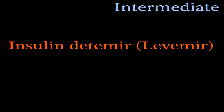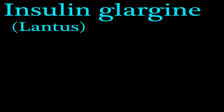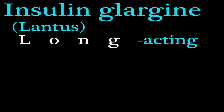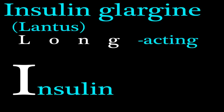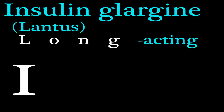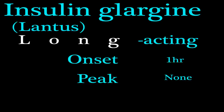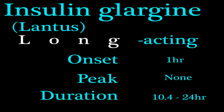There's also insulin detemir, which is also called Levemir. The last one is insulin glargine, and this is Lantus — the long acting. The first letter in 'insulin' looks like a one, so the onset is one hour. There is no peak. The duration is 10.4 to 24 hours — it's a weird number, but if it's on the test it might have 10.4 as an option, so go with that one.